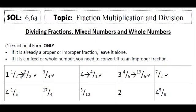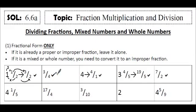One and a half is a mixed number, so we would need to multiply the denominator and the whole number. So 2 times 1 is 2, and then 2 plus 1 is 3, and that is our new numerator, and we'll keep the denominator the same. Now 3 halves is a fraction. 3 fourths is a fraction, so we're going to leave that alone.